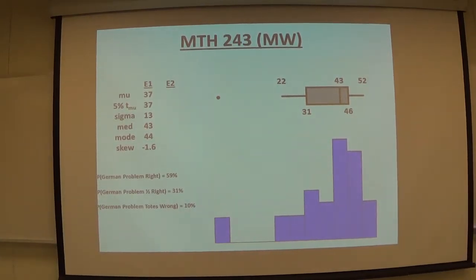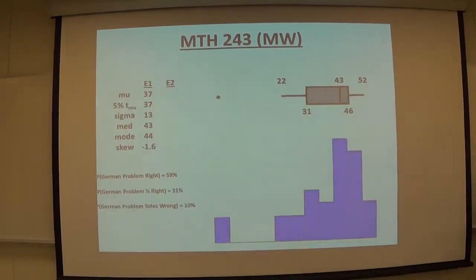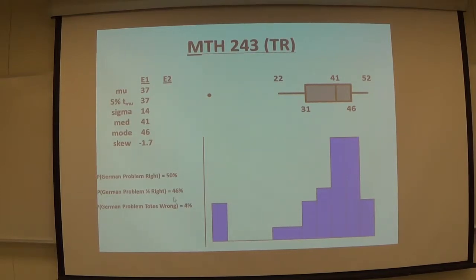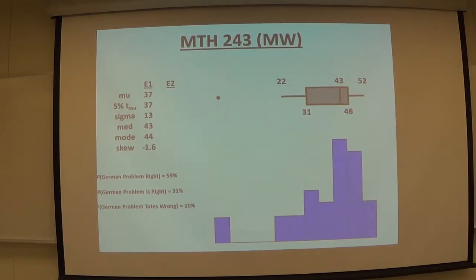That's the one about they tank their exam and the teacher adds 25 points per exam to that problem. Three out of five of you got it 100% correct. Three out of ten of you got it half right. And only one in ten of you got it completely wrong. The other class, same question right there. Half of them got it completely right. Almost half of them got it half right. And only 4% of them got it completely wrong.